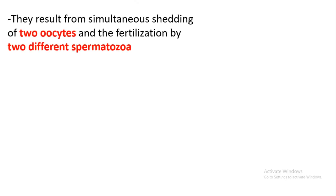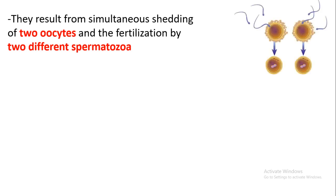As stated, dizygotic twins are a result of the fusion of two oocytes and two different sperm, where one oocyte is fertilized by one sperm and another oocyte is fertilized by a different sperm. So dizygotic twins come from two oocytes and two different sperm, just as shown in the diagram — two different sperm fertilizing two different eggs to form dizygotic twins.